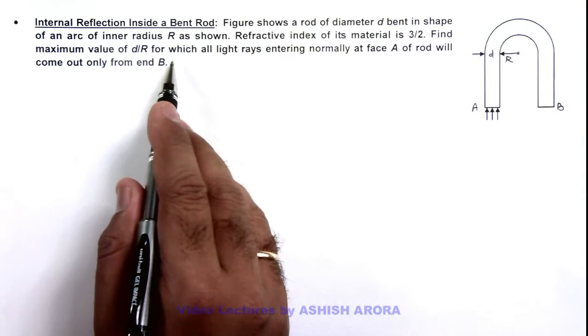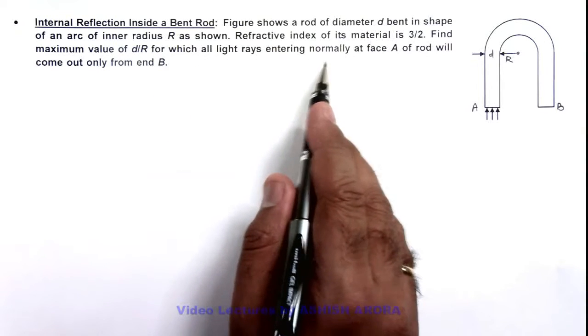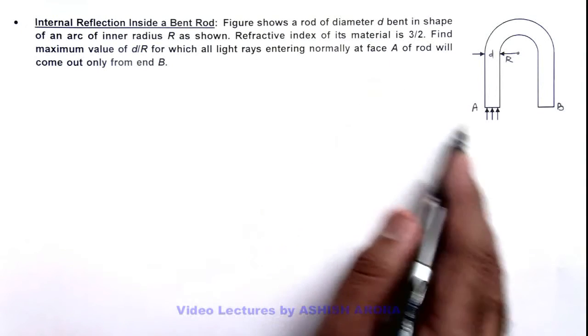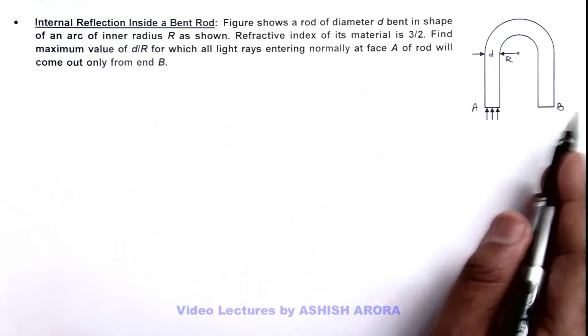We are required to find the maximum value of d by r for which all light rays entering normally at face A of the rod will come out only from end B.